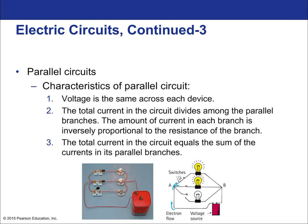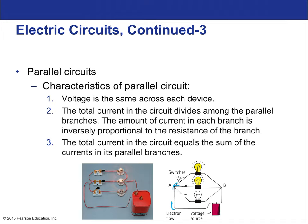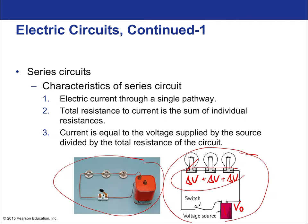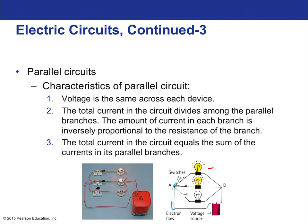Parallel circuits are very different. The voltage is the same across each device — each one creates a complete circuit and each has to return to zero. The total current in the circuit divides among the parallel branches, with the amount of current in each branch inversely proportional to the resistance of that branch. In the series case we summed voltages; now in the parallel case we sum currents: I₁ + I₂ + I₃ = total current from the battery.